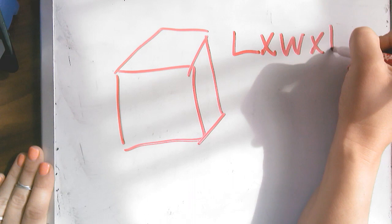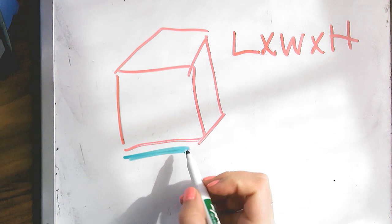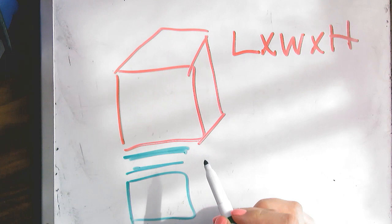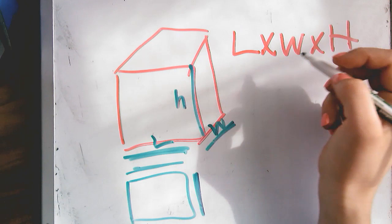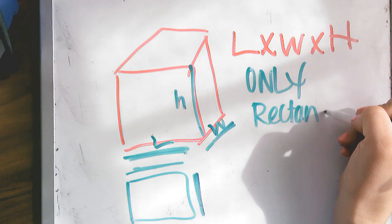So our length is normally the across. So if we were looking at this from above, the length is one of the sides. And then the width is how deep it is. So length and width, and the height is how tall it is. So we can use this formula only on rectangular prisms.